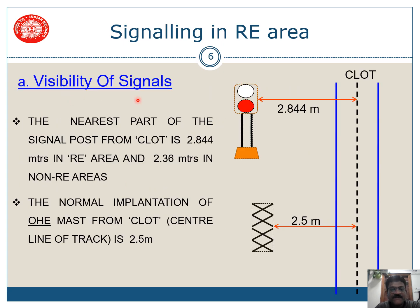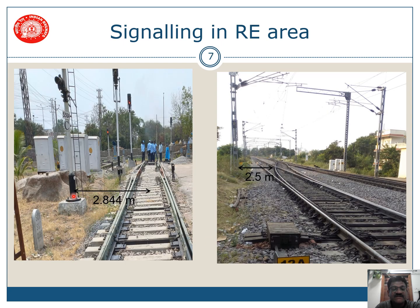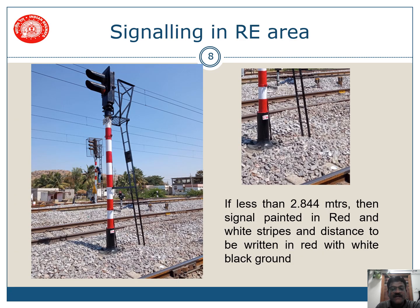Regarding visibility of signals: the nearest part of the signal post from the central line of track is 8.444 meters in RE area, so the minimum distance from the central line of track to the signal is 8.44 meters. The OHE mast is around 2.5 meters from the central line of track. If the distance is less than that, the signal should be painted in red and white stripes, and the distance from the signal to the central line of track has to be written in red on a white background.